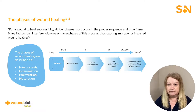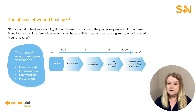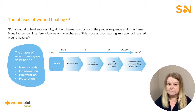The third phase of healing is proliferation, when new tissue is rebuilt. The cells responsible for the development of new blood vessels, collagen, and other connective tissue are called fibroblasts. New blood vessels are stimulated by macrophage activity and begin to grow into the matrix, a process known as angiogenesis.